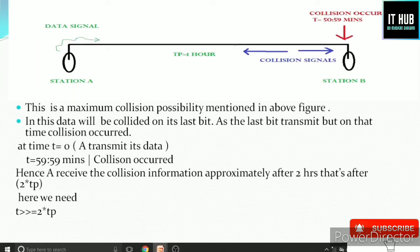This is the maximum collision possibility scenario. At time T=0, A starts data transmission. Just before the last bit is sent, the collision signal is received by A — approximately after 2 hours. So the requirement is: transmission time T must be greater than or equal to 2 times the propagation time (T ≥ 2 × TP). For example, if propagation time is 2 hours, then transmission time should be at least 4 hours. This is how the collision signal is detected. Thanks for watching.